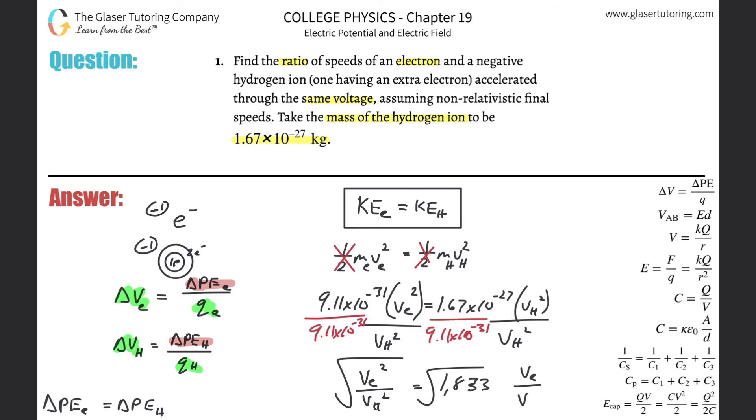And this tells us that the velocity of the electron to that of the hydrogen ion will be equal to the square root of that value, which is, well, to the square root of a negative number. So that doesn't quite work. And we get about 42.8. So 42.8.